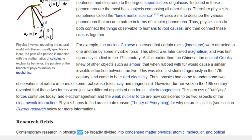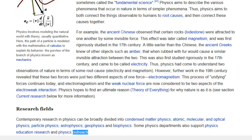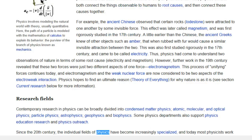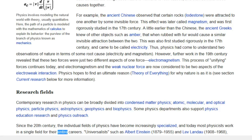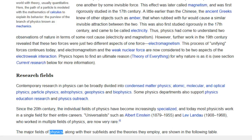Research fields. Contemporary research in physics can be broadly divided into condensed matter physics, atomic, molecular and optical physics, particle physics, astrophysics, geophysics and biophysics. Some physics departments also support physics education research and physics outreach. Since the 20th century, the individual fields of physics have become increasingly specialized, and today most physicists work in a single field for their entire careers. Universalists such as Albert Einstein, 1879-1955, and Lev Landau, who worked in multiple fields of physics, are now very rare. The major fields of physics, along with their subfields and the theories they employ, are shown in the following table.